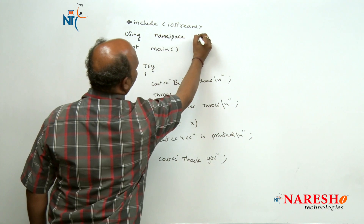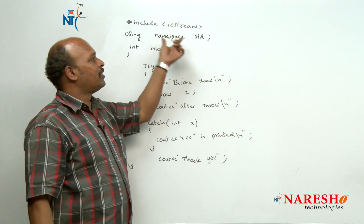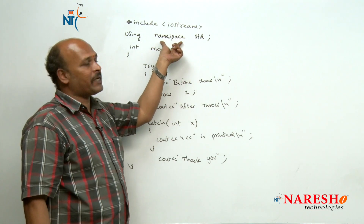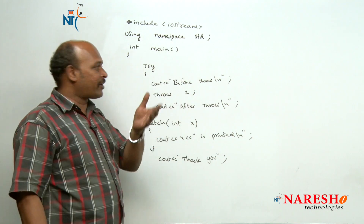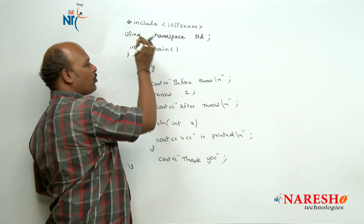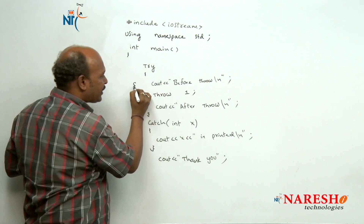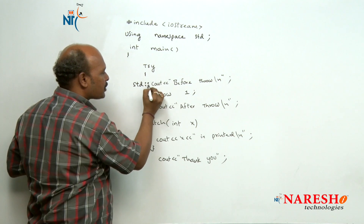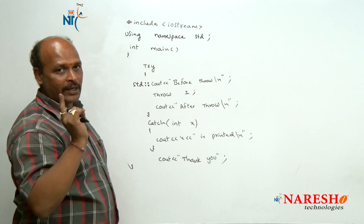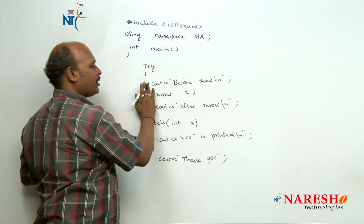With using namespace std declared, the compiler uses the std namespace which is a container holding regular objects like cout and cin. When using namespace std is mentioned, there is no need to write std:: before cout. Otherwise you must write std::cout every time — that is the rule.